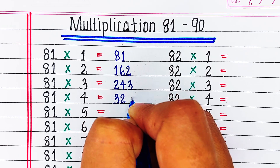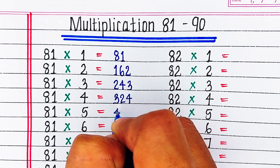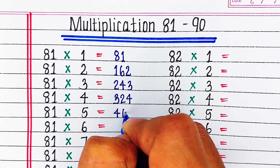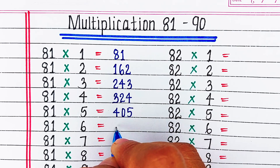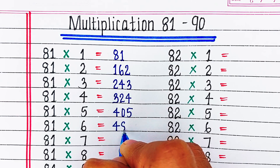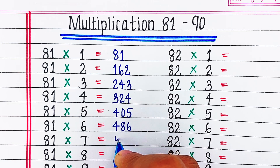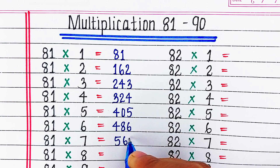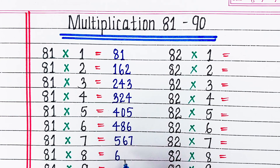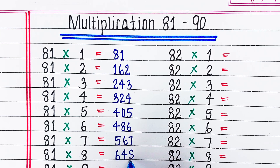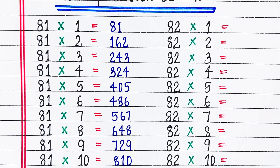Let's start with table of 81. 81 8s are 648, 81 9s are 729, 81 10s are 810.